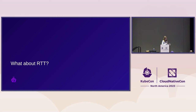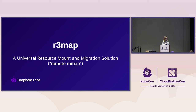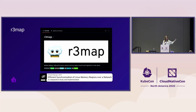NBD is also designed for LAN — in most cases, you won't be using NBD over the public internet. This would allow us to access any kind of remote resource we can represent using the network, but it's not optimized for high-RTT scenarios like moving between continents. This is where Remap comes in — the thing mentioned in the description of the talk. It's a universal resource mount and migration solution called 'remote mmap.' This is all part of a research paper which I'll be linking — it's completely open.